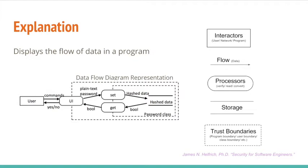A square, solid-lined box represents an interactor. An interactor can be a user, a network, or a program. An interactor is typically what provides new data, requests data from a program, and reads data. An interactor can read, write, and edit data in a program. Essentially, the program is there to serve the interactor.